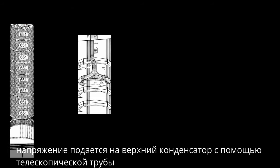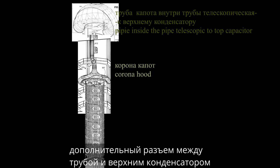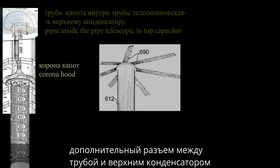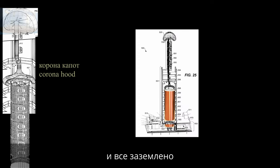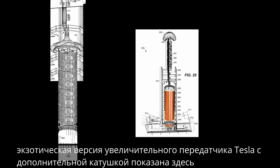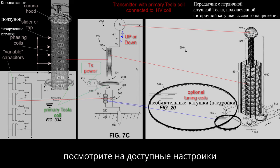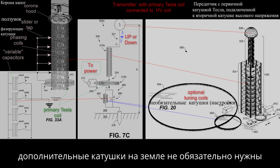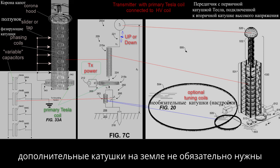In the Visiv structure of the Tesla coil we have a ground wire, primary coil, set of individually tuned phasing high-voltage coils, and a corona hood. The corona hood overlaps the few top winds of the high-voltage coil. The whole voltage is delivered to the top capacitor, with an additional device connecting the top capacitor to the pipe, and then we have a ground. An exotic version of the Tesla magnifying transmitter with an extra coil is also shown — look at the number of tuning factors. It works as well. Additional coils on the ground are not necessarily required.